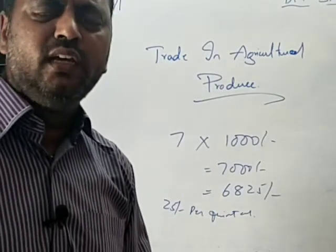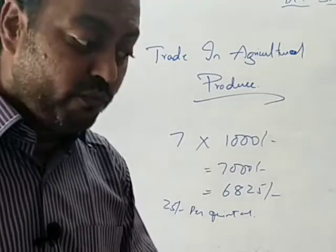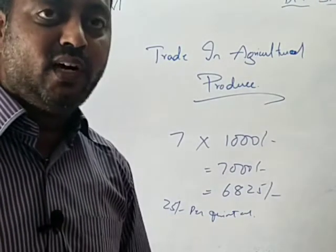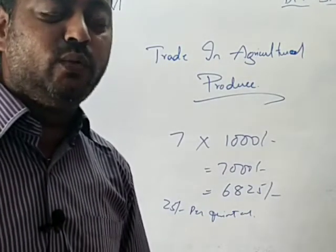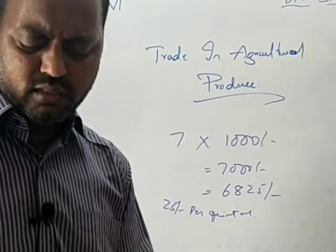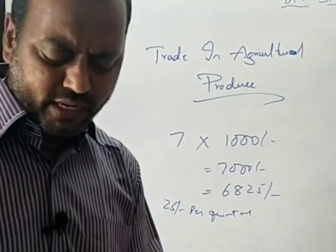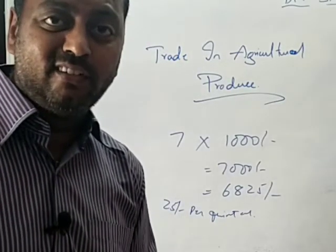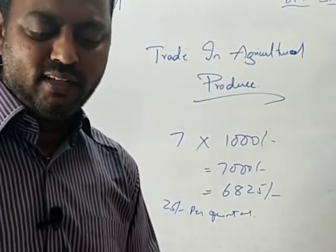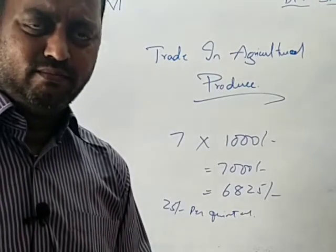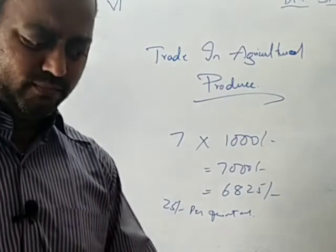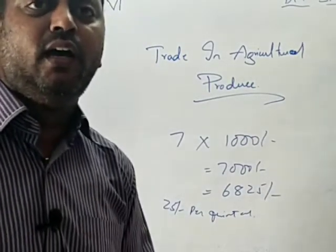Paddy traders not only pay low prices but also cheat in weighing — as seen in Shanti's case, where the broker weighed 6.5 quintals but re-weighing gave 7 quintals. They also take commissions on the pretext of many things, and many farmers receive delayed payments beyond 15 days. Since these traders and landlords lend money in desperate times, farmers have to sell only to them and have no option to go to the market yard and participate in auctioning.